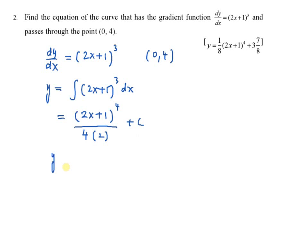Therefore, you have y = (2x + 1)⁴/8 + c. To get the value of c, substitute (0, 4) into the equation. That is, 4 = (2(0) + 1)⁴/8 + c. This simplifies to 4 = 1/8 + c, so c = 3⁷⁄₈.